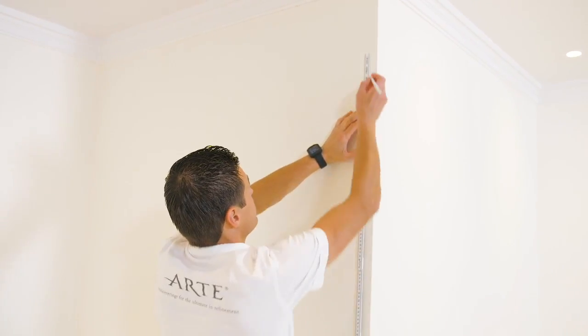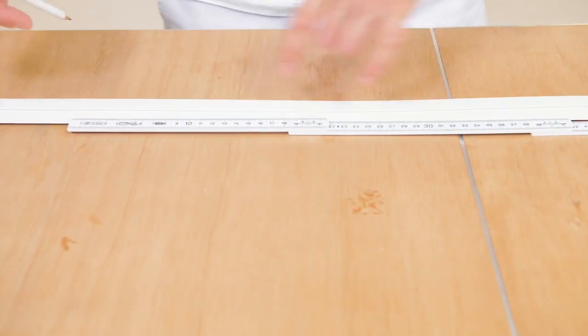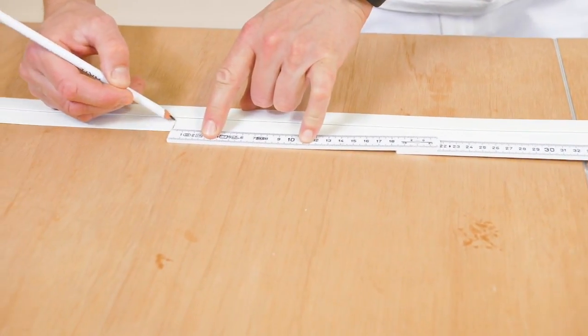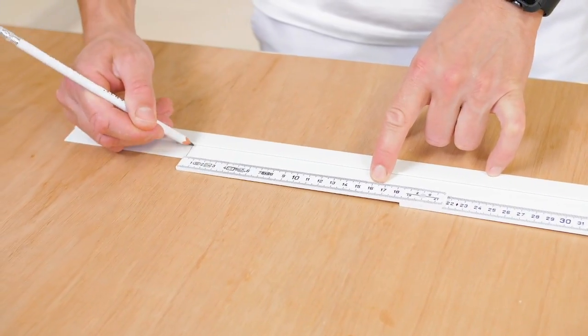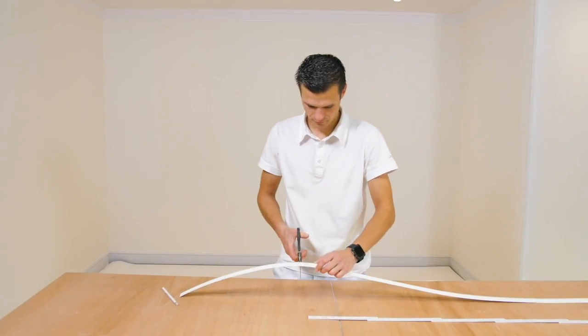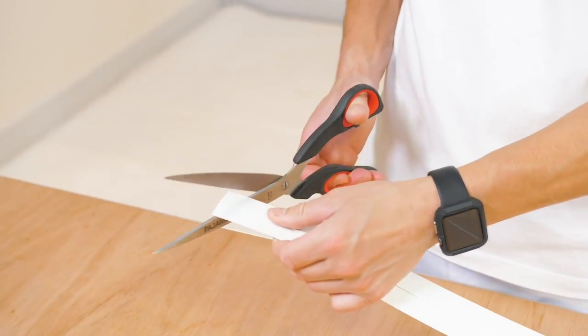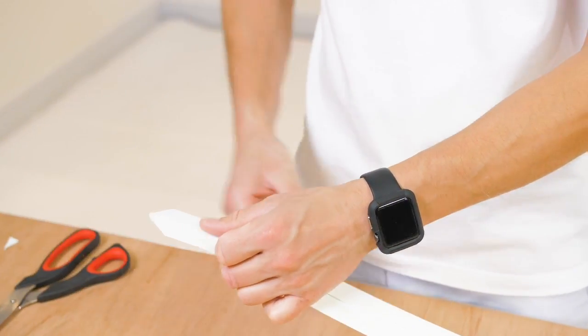Measure the height of the wall at the outer corner. Cut the corner guard to the right length. Cut off the sides diagonally at the top and bottom so that the point rests beautifully against the ceiling and skirting board.